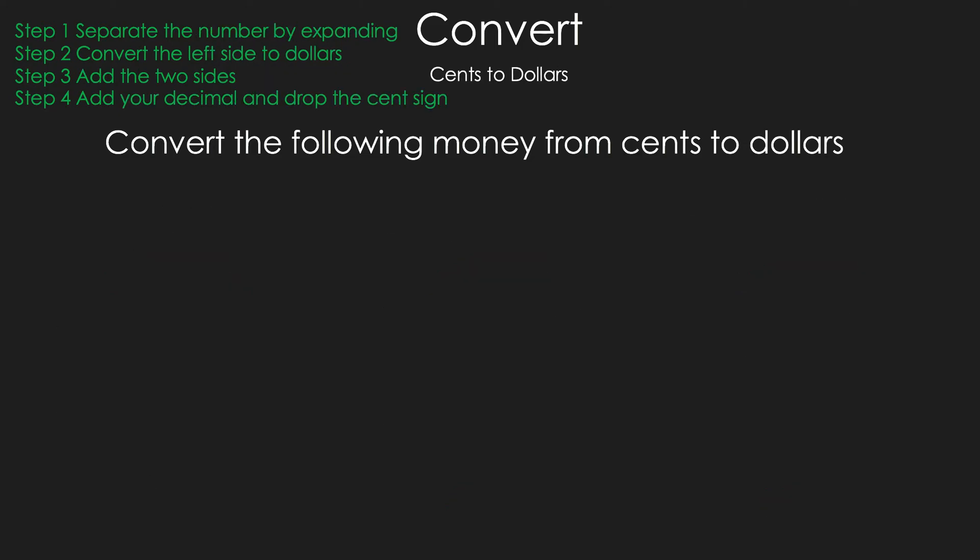Now, we're going to move on to the other way: cents to dollars. As you can see, the steps have changed. Step 1: Separate the number by expanding. Step 2: Convert the left side to dollars. Step 3: Add the two sides. Step 4: Add your decimal and drop the cent sign.